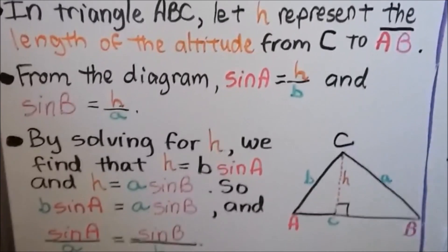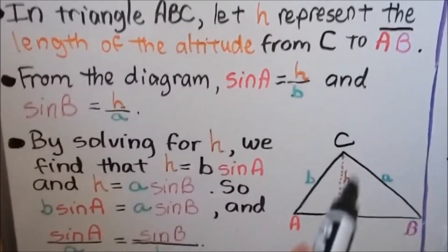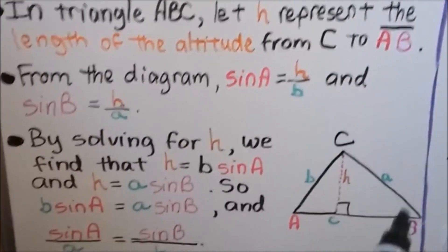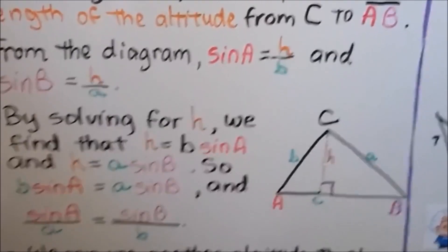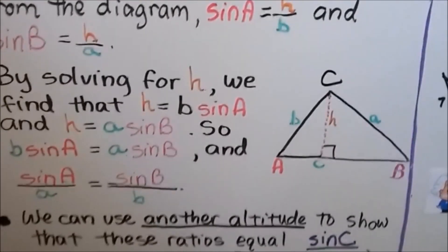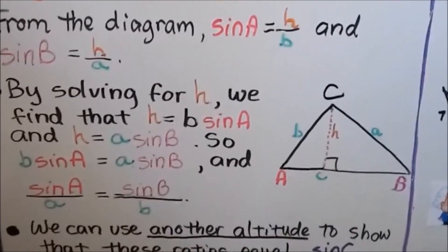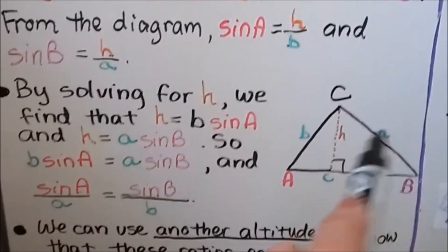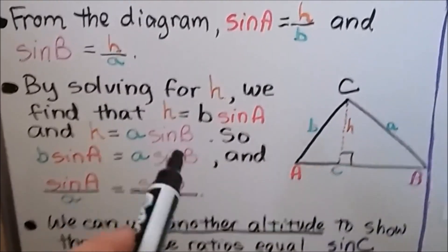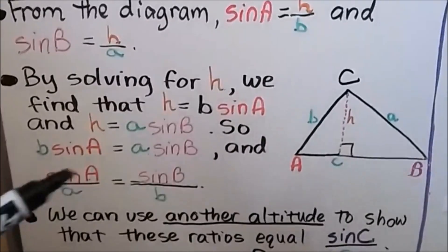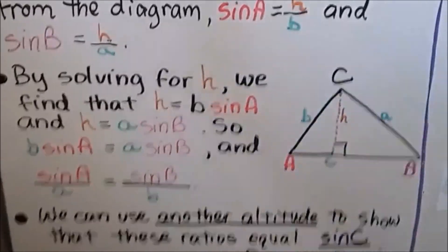From the diagram, the sine of A equals H over B, and the sine of B equals H over A. By solving for H, we find that H equals B sine of A, and H equals A sine of B. So B sine of A equals A sine of B, and sine of A over A equals sine of B over B.